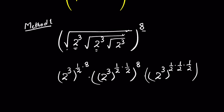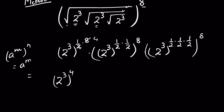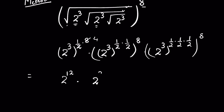Then the whole expression is raised to the power of 8. Now using the identity (aᵐ)ⁿ = aᵐⁿ: 2 times 4 is 8, so 2 raised to the power 3 whole raised to the power 4 gives 2 raised to the power 12. Then times 2 raised to the power 3 times 1/4 times 8 — since 4 times 2 is 8 and 3 times 2 is 6.